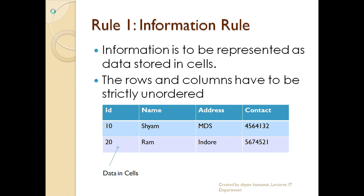Now let's talk about Rule number one — the Information Rule. The first rule states that information is to be represented as data stored in cells. If we talk about rows and columns, a cell is the intersection of a row and a column. So here you can see values like 10, SHAM, and MDS stored in cells.